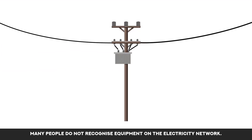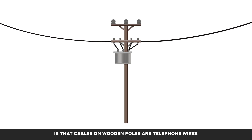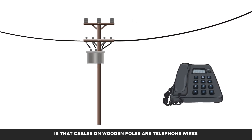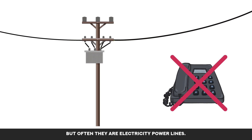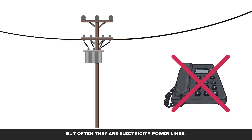Many people do not recognise equipment on the electricity network. For example, a common misunderstanding is that cables on wooden poles are telephone wires, but often they are electricity power lines.